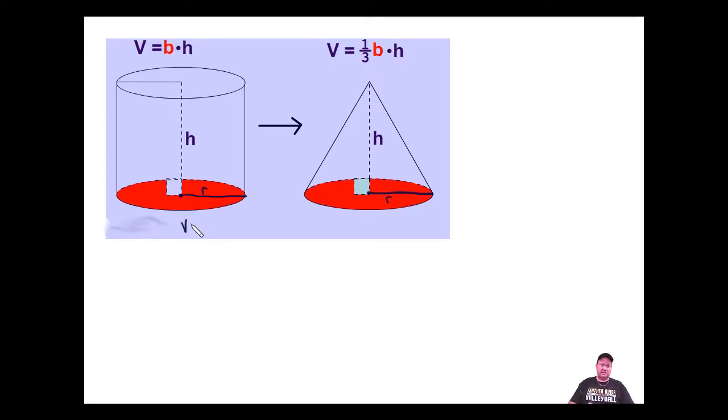So the volume of a cylinder is πr² times the height, whereas the volume of a cone is one-third. The formula is still, the rest of it is still the same, one-third πr²h.